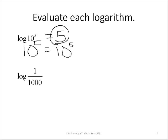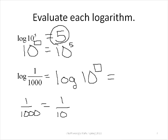On this next one, the log of 1 over 1000, we need to write that as the log of 10 to a power, and this power will be our answer. If we think about 1 over 1000, what we know is 1000 is 10 to the 3rd power. So if we have 1 over 10 to the 3rd power, that's the same as 10 to the negative 3rd power. So the log of 1 over 1000 is the log of 10 to the negative 3rd power, and our answer would be negative 3.